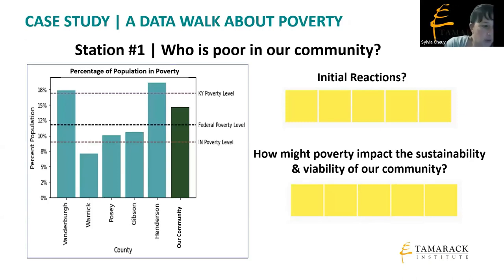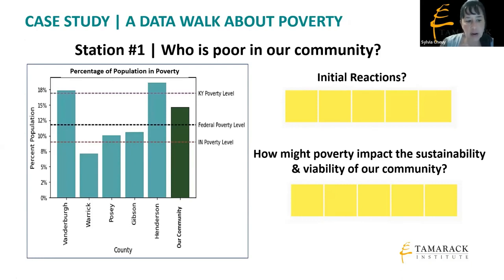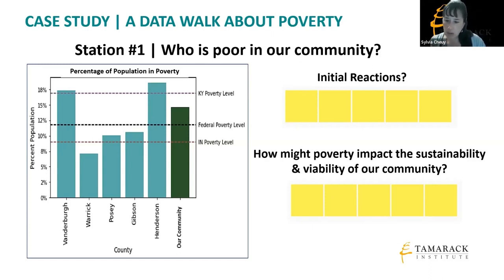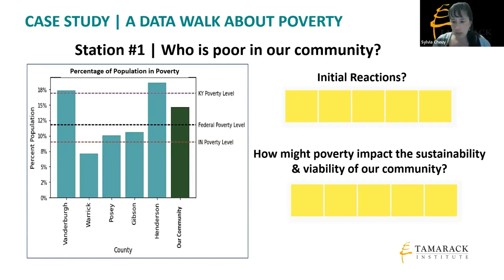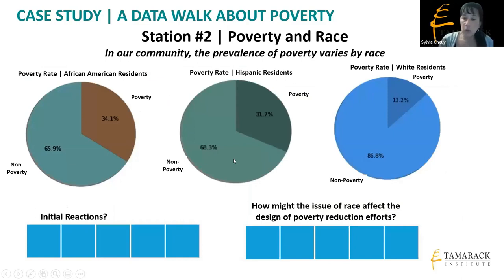Station one: their community is shown in dark green, with lines showing poverty levels in their state and neighboring state and how other counties compare. They're not the highest in poverty but not the lowest either. In their small group, participants catch initial reactions, then we pose the thought-provoking question: 'How do we think poverty would impact the sustainability and viability of us as a community?' We're already starting to shift people from thinking 'we have to fix these people' to 'wow, this is a problem our community ought to deal with.'